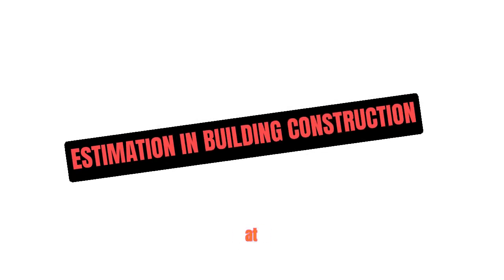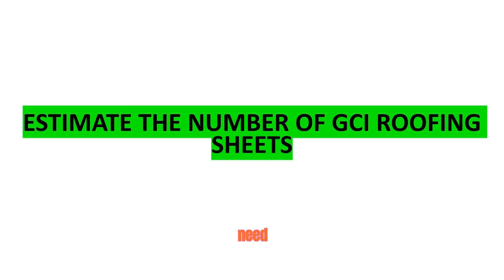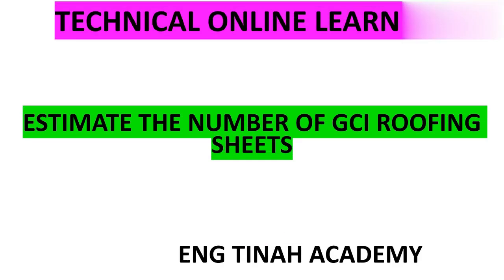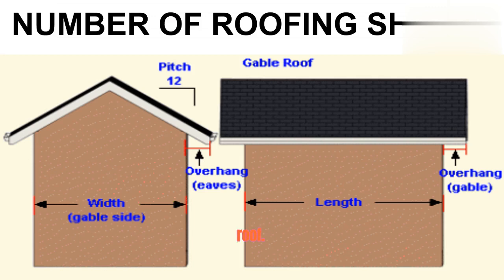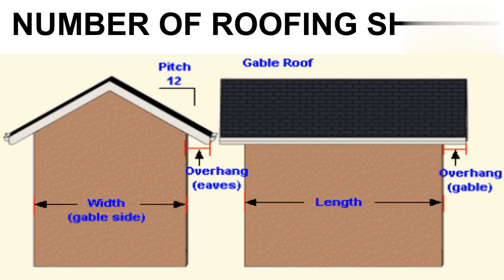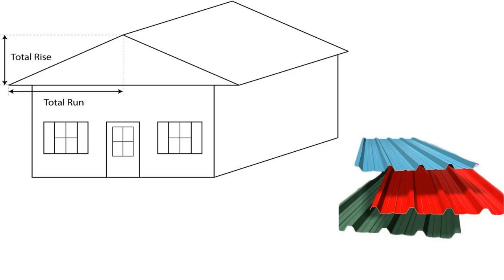Hi guys, today we are going to look at the number of roofing sheets that we need on our gable roof. If you are new here, kindly remember to subscribe and stay tuned. Now let's look at our roof — we are going to look at a gable roof. We have our length here and we have our width here, and then we have an overhang on this side of the width, and we have the eaves here and then the verges on the length side. We are going to calculate the roof area and then find the number of iron sheets required.